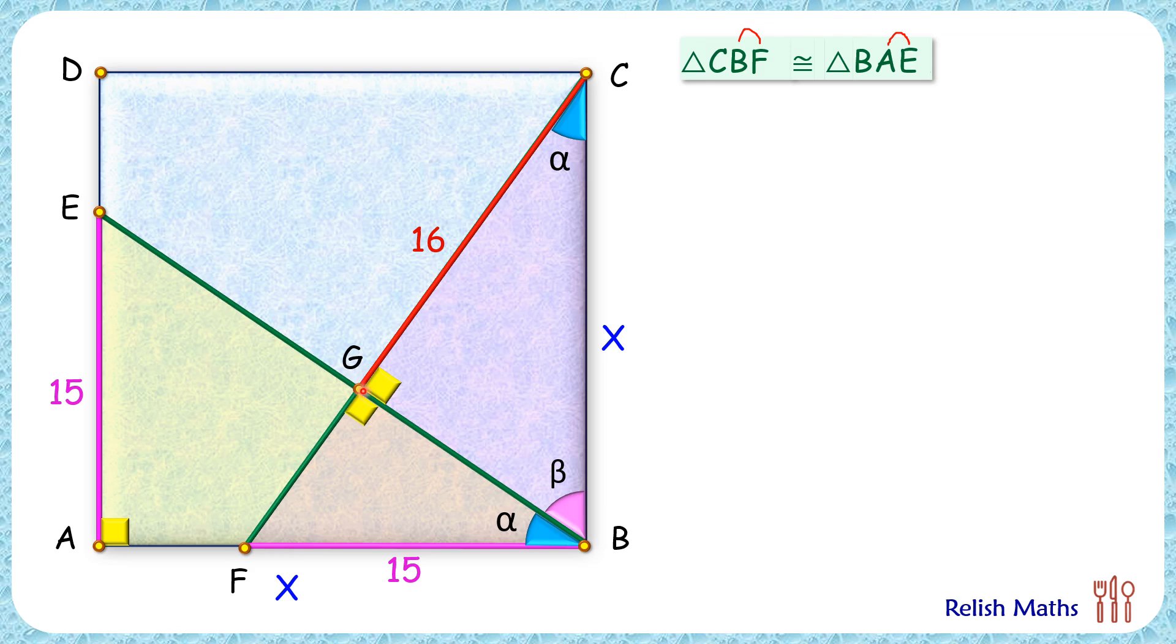Now let's assume this length GF is a centimeter. Now let's look at this triangle again, that's triangle CBF and triangle BGF. Both have this angle alpha and 90 degrees here.